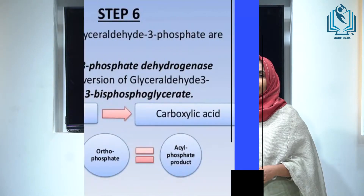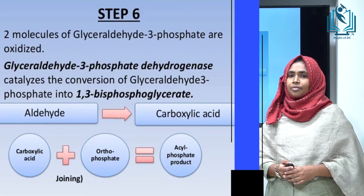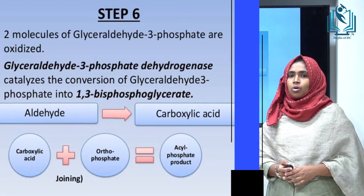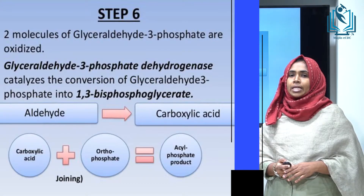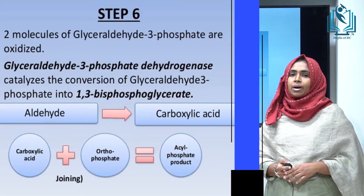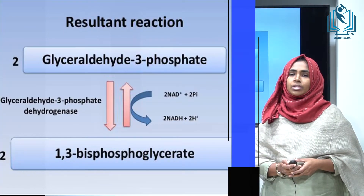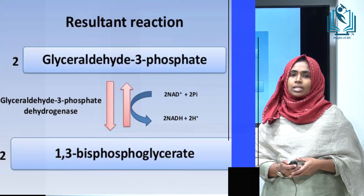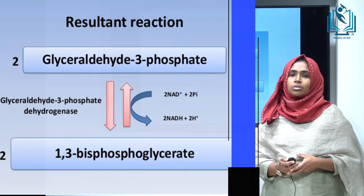Step six begins the energy generation phase. Two molecules of glyceraldehyde-3-phosphate are oxidized into two molecules of 1,3-bisphosphoglycerate by the enzyme glyceraldehyde-3-phosphate dehydrogenase. A phosphorylation reaction takes place and two molecules of NADH are produced. These NADH molecules enter the electron transport chain for further energy production.